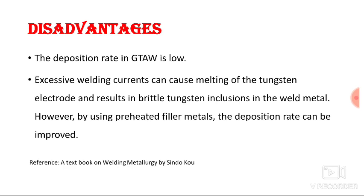The disadvantages of GTAW: the deposition rate is low because filler metal is supplied manually during the welding process. Excessive welding current can cause melting of the tungsten electrode, resulting in brittle tungsten inclusion in the weld metal — the melted electrode tip falls inside the weld metal. However, by using preheated filler metal, the deposition rate can be improved. This is all about tungsten inert gas welding, or more appropriately, gas tungsten arc welding. Thank you so much for watching.